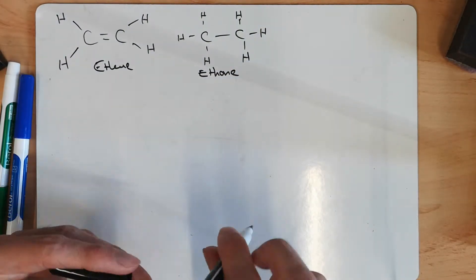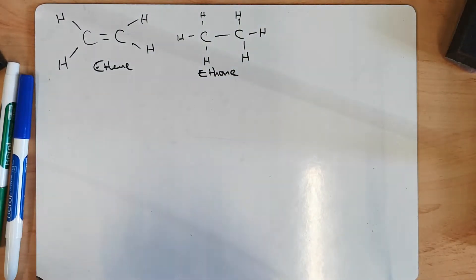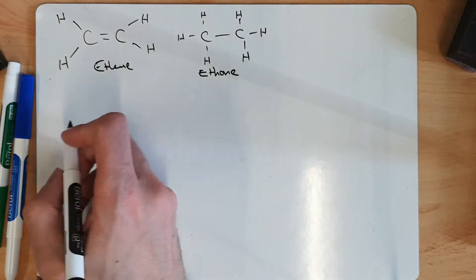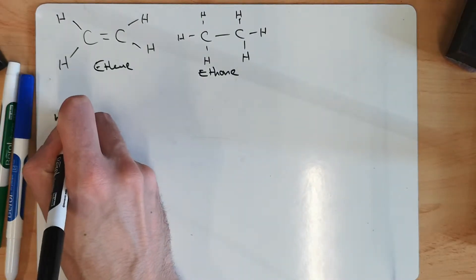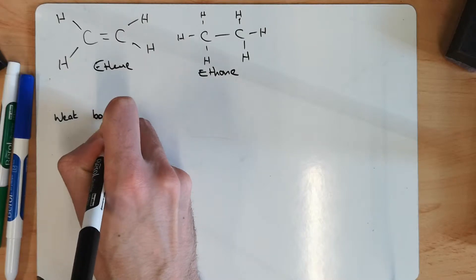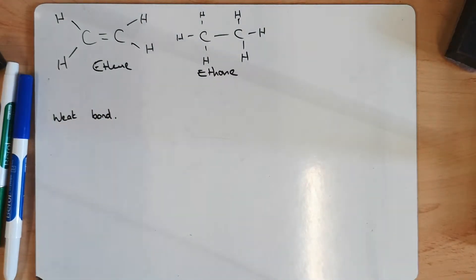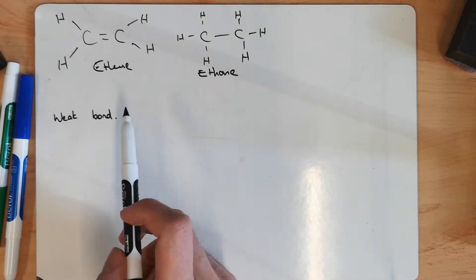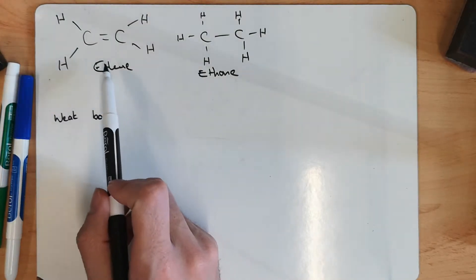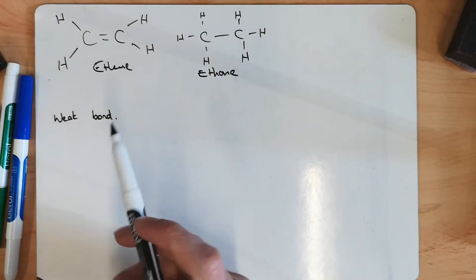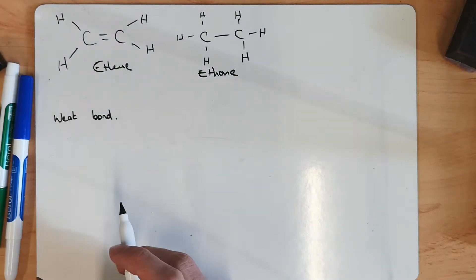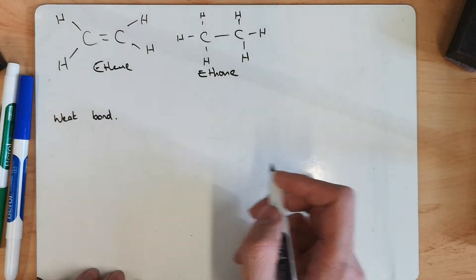And we're going to look at two reasons why that is. The first reason is because it's got a weak bond. And if you watched a previous video, you'd know what that weak bond is. The bond that ethene has that ethane doesn't have, and it's the pi bond.